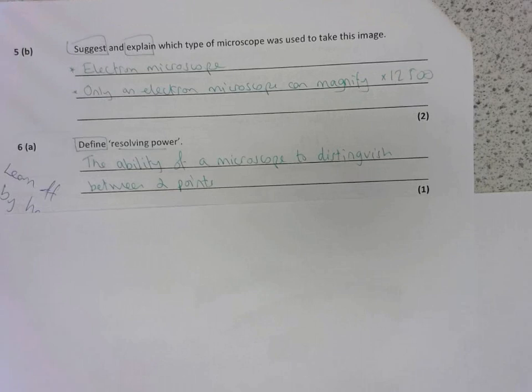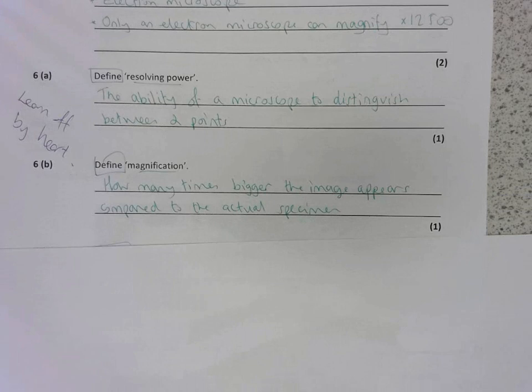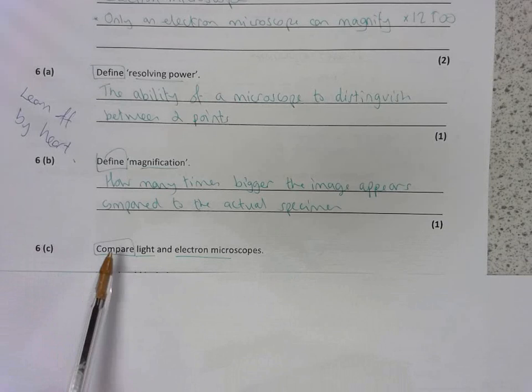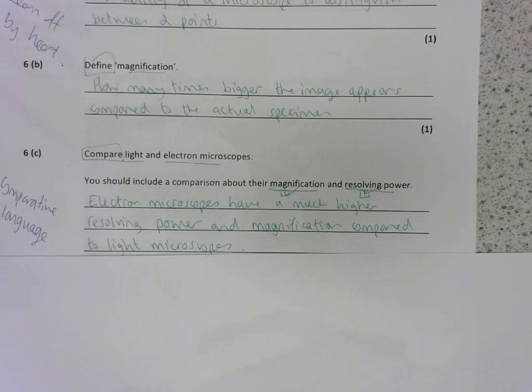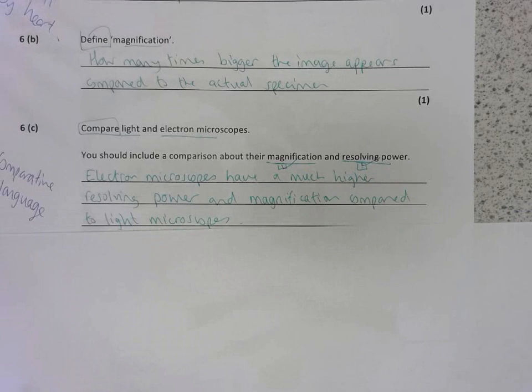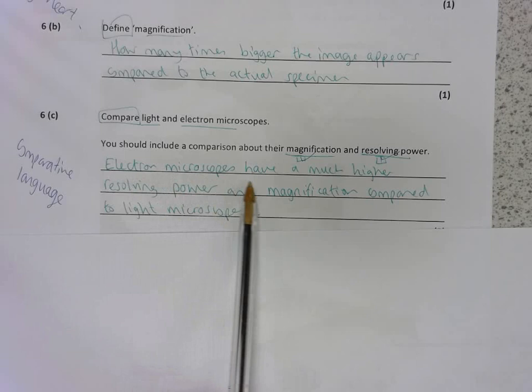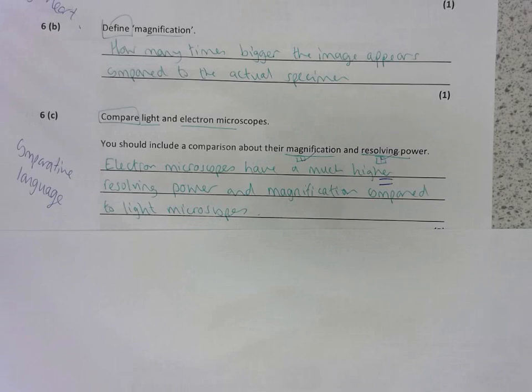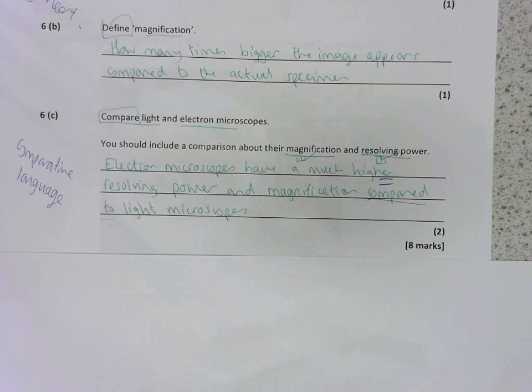Next, define resolving power and magnification. These are just definitions you need to learn off by heart. Have a read and check if you got those correct. 6C. Compare light and electron microscopes. You should include a comparison about their magnification and resolving power. So I've made myself two check boxes and I've ticked them off as I've done that. And I'm using comparative language because it is a compare question. So I've said electron microscopes have a much higher, and that's my comparative language there, resolving power and magnification compared to light microscopes. Again, more comparative language there. So they have a higher magnification and a higher resolving power. If you compare to the specific details, you could also get the marks.